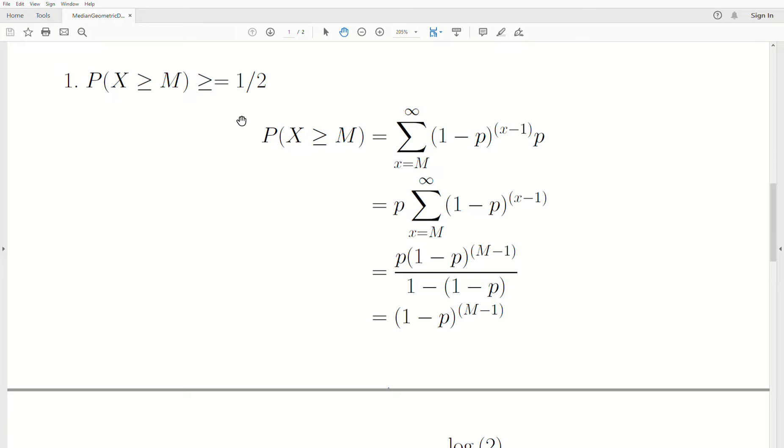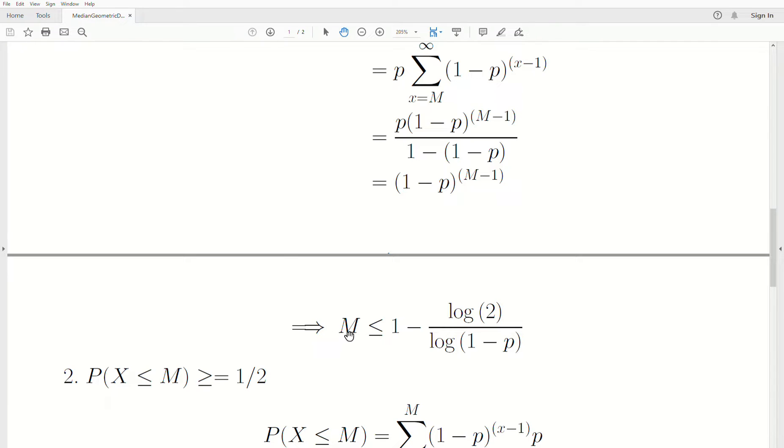So this is the left side of this inequality. This implies, if we put this over here and then back solve for M, we get this inequality: M ≤ 1 - log(2) / log(1-p). Now notice that this log of 1 minus p is between zero and one, which will create a negative number, and with this negative numbers it makes it positive.